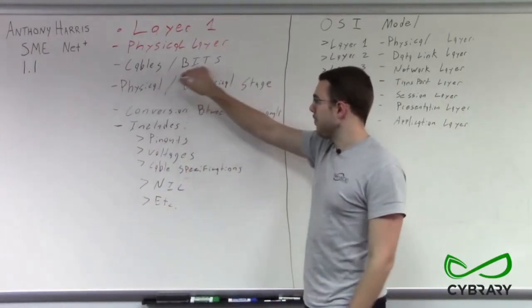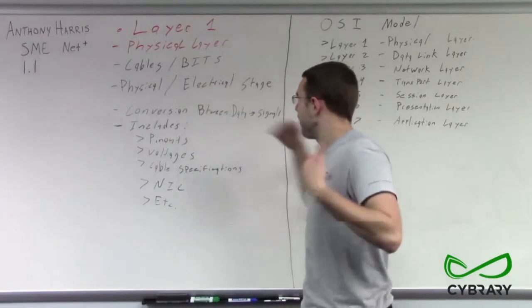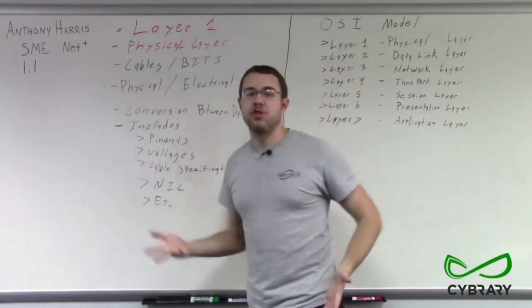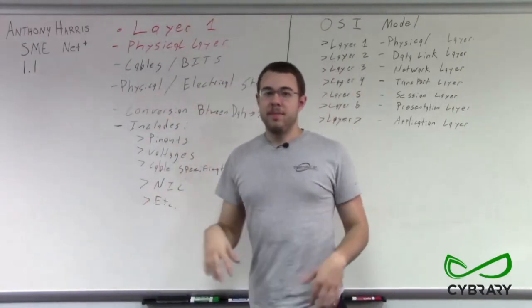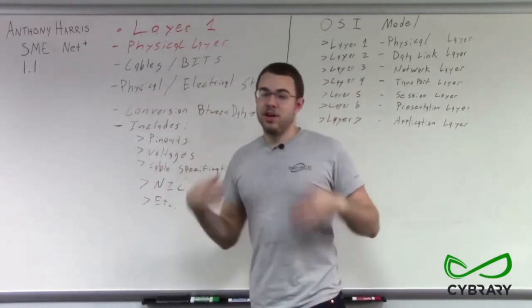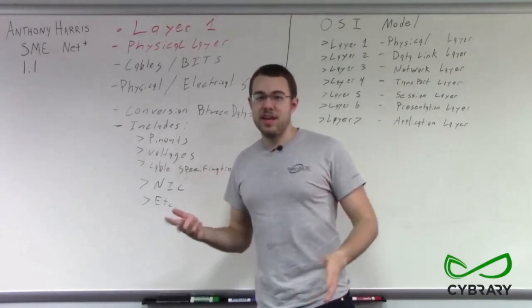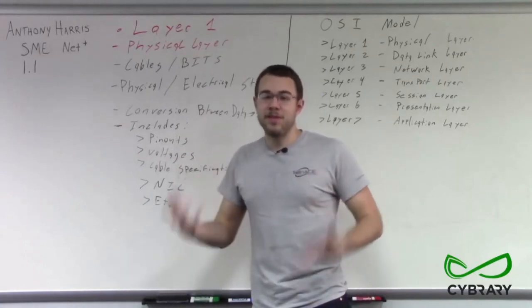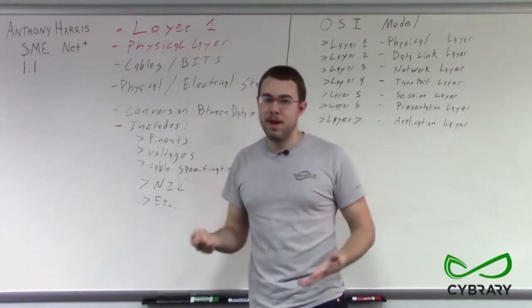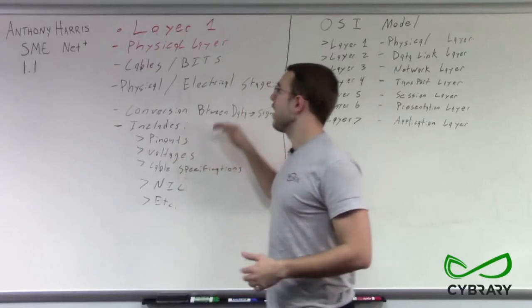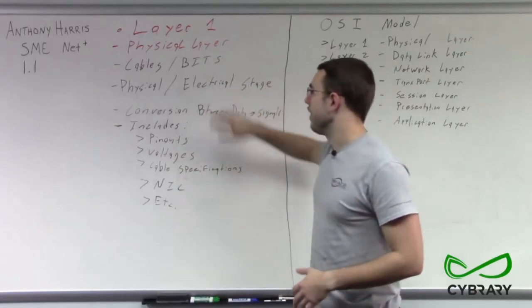These cables and bits make up our physical and electrical stage. Electrical impulses — electricity is something that's physical, something that we can measure. So we consider that at our layer 1 level.